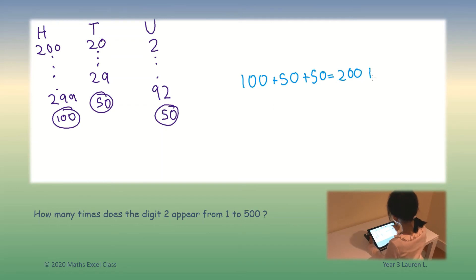The digit 2 appears 200 times from 1 to 500.